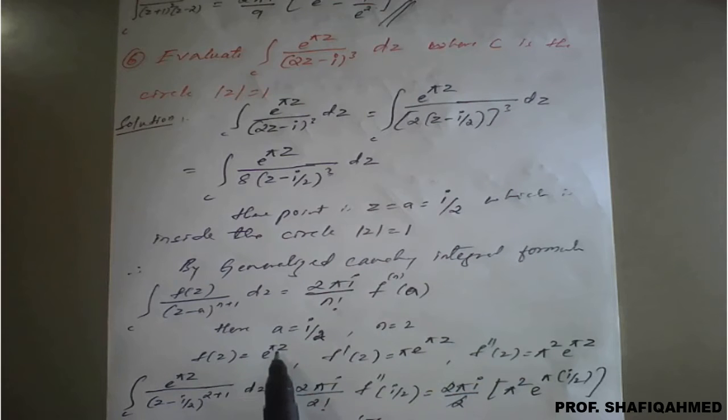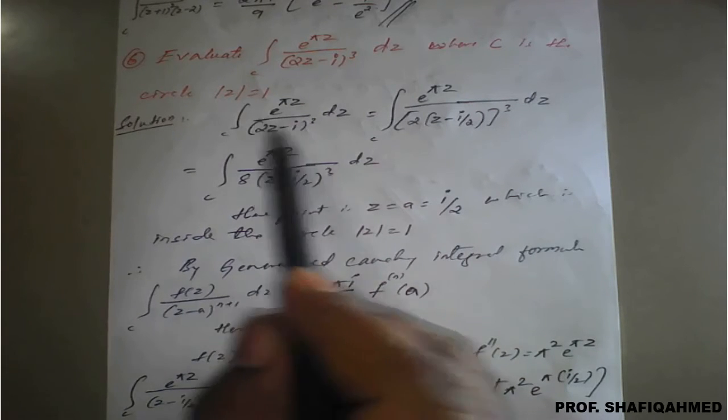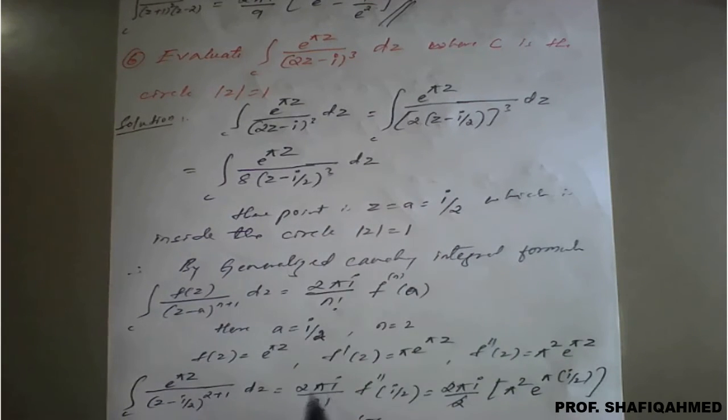f of z is e raised to pi z, that is the numerator part of the given question. If you differentiate e raised to pi z one time it will become pi times e raised to pi z. If you differentiate this one more time it will become pi square into e raised to pi z.